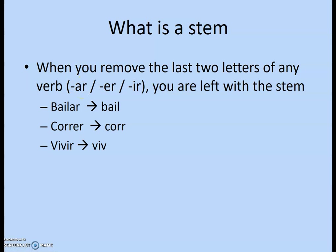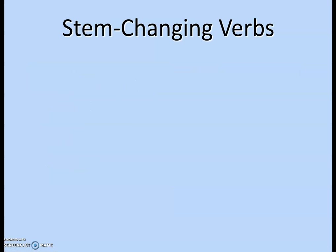Those examples happen to not be stem-changing verbs — they're regular verbs, so they get conjugated just like they look. Here's another one: limpiar. What's the stem? Limpi. That one has two vowels at the end, which sometimes confuses people, but it doesn't matter. Remove the last two letters and you've got your stem.